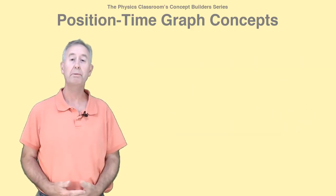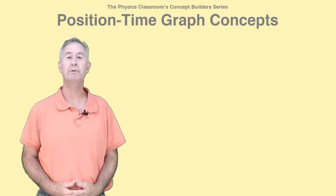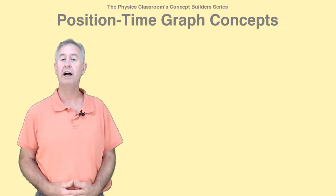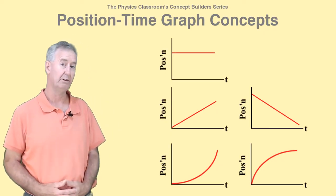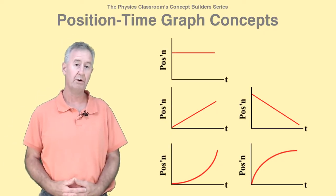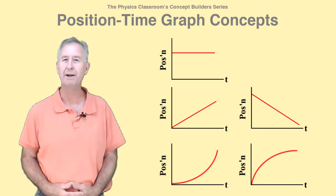Position-time graphs, or PT graphs, show an object's position as a function of time. The manner in which the object moves determines the look of the graph, like whether it's horizontal, or straight and diagonal, or even curved. Let's talk about the details.